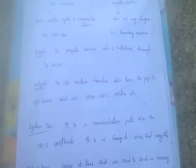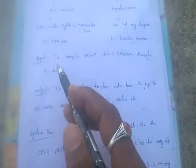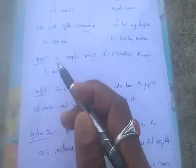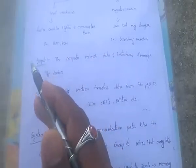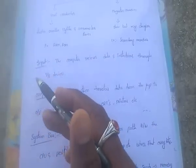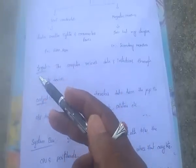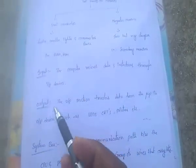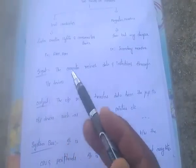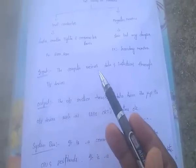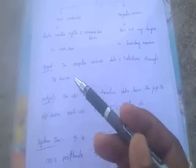Input: the computer receives data or instructions through input devices. Output: the output section transfers data from the microprocessor to output devices such as CRTs or printers.